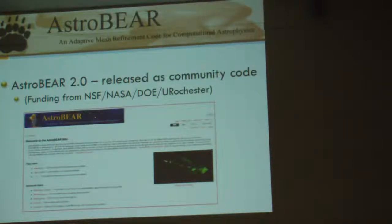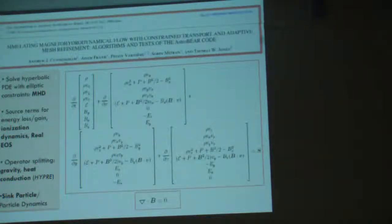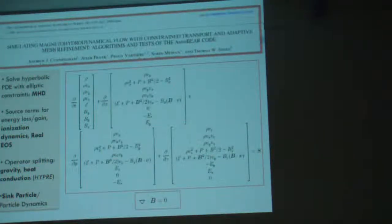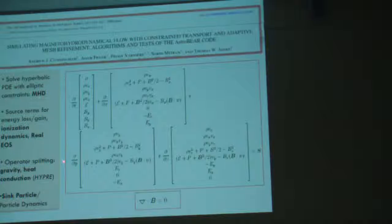One of the things we've developed is a wiki for users. We've spent a lot of time thinking about how people pick up a code like this. What we're actually simulating — from the first paper on AstroBear from 2009 — we're solving hyperbolic partial differential equations: the equations of MHD. Notice this source term, where all the multi-physics goes. Because it's MHD, we have to solve the del-dot-B equals zero constraint — we don't generate magnetic monopoles. We have source terms for energy loss, ionization dynamics, a real equation of state, gravity, heat conduction, viscosity, resistivity, and sink particles for particle dynamics and accretion explicitly.